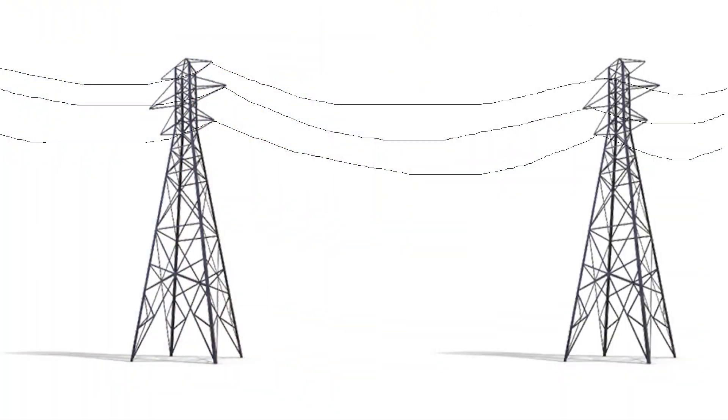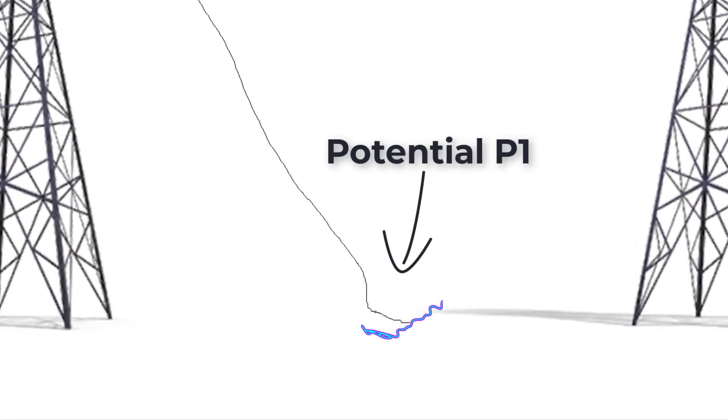Assume that there is a broken overhead transmission line conductor that is now touching the ground while the conductor is energized. In the touching point, a huge potential value will be produced.